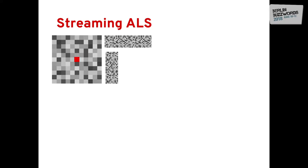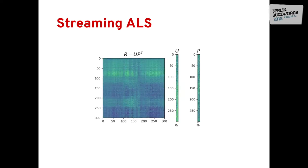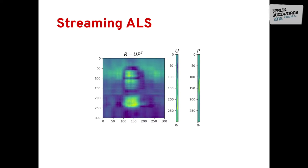The practical difference is now evident. With batch ALS, whenever you get a new rating, you have to recalculate both factors alternately. With SGD-based factorization, whenever there's a new rating, you simply update one row in the latent factors. An SGD demo on the same data shows convergence is slower since we use one observation at a time, but in the end it produces a similar result.